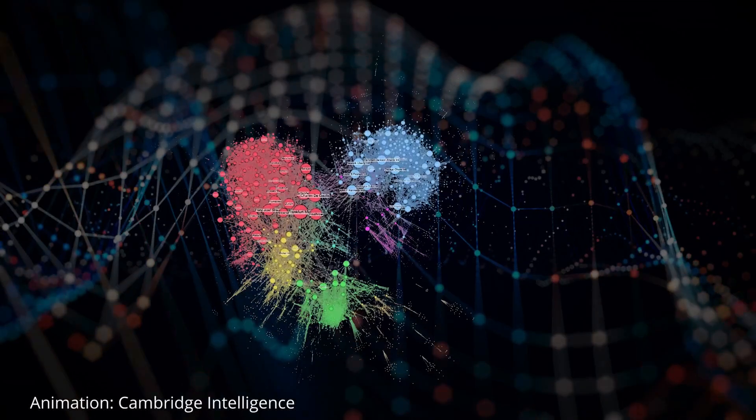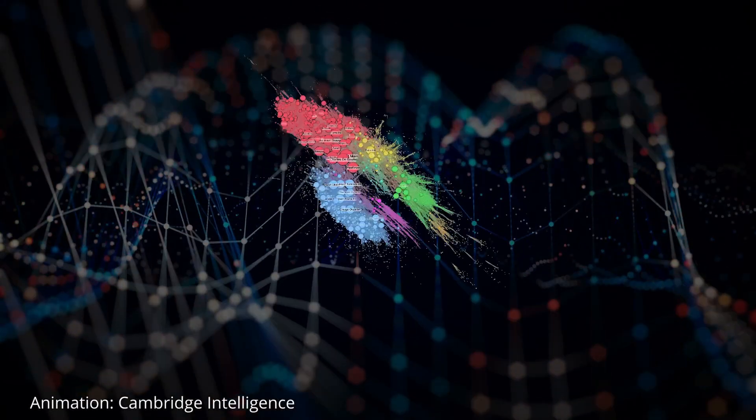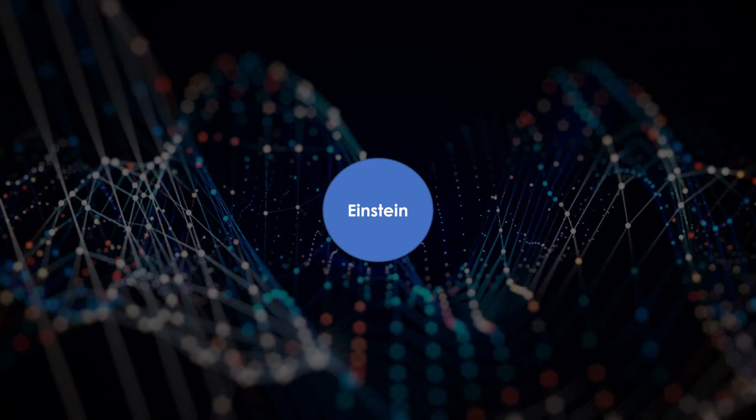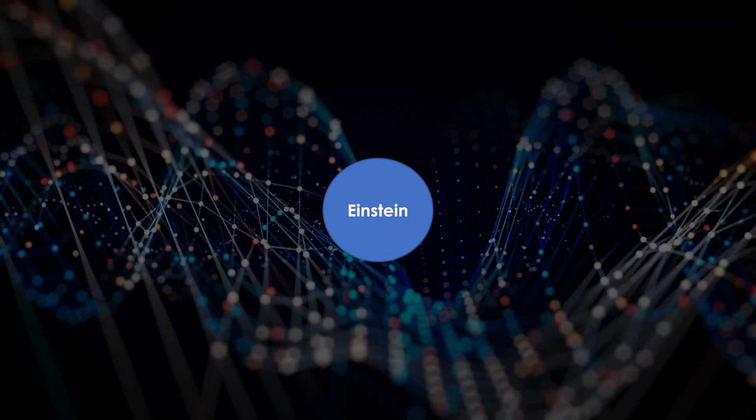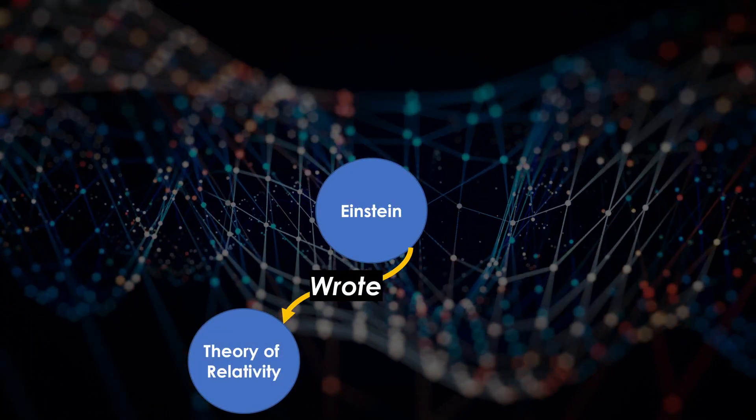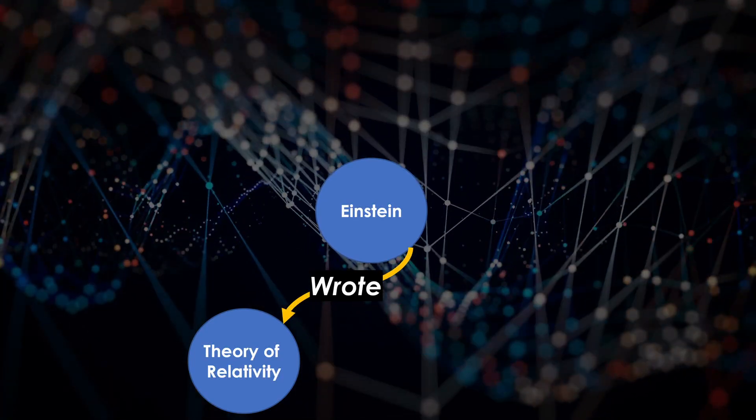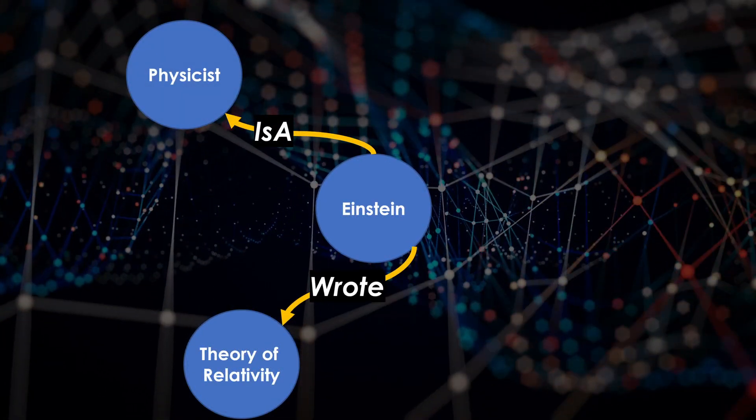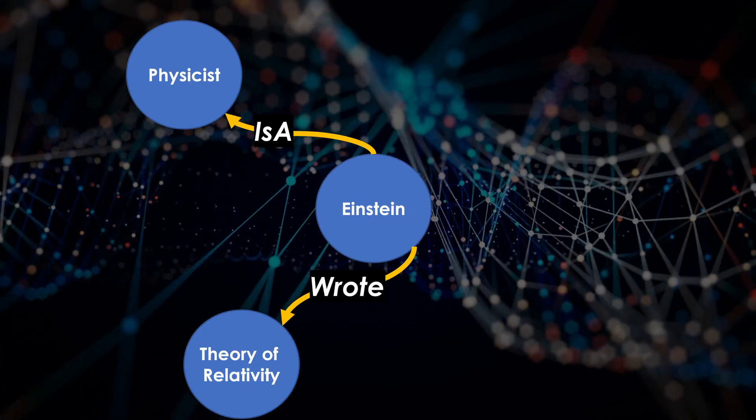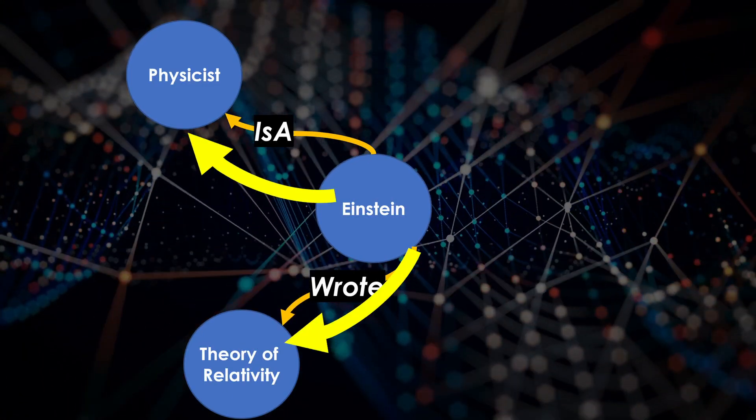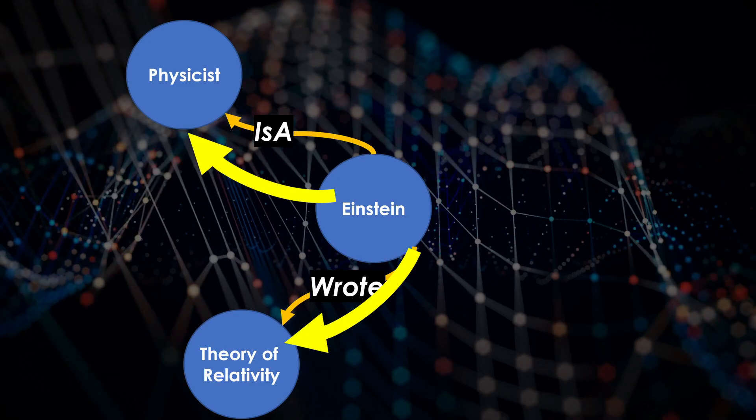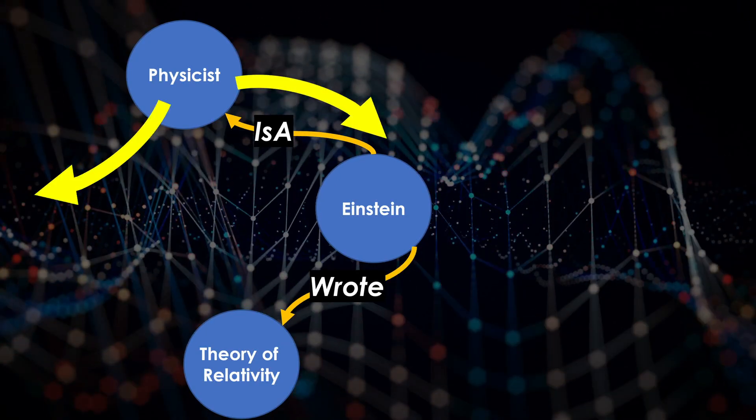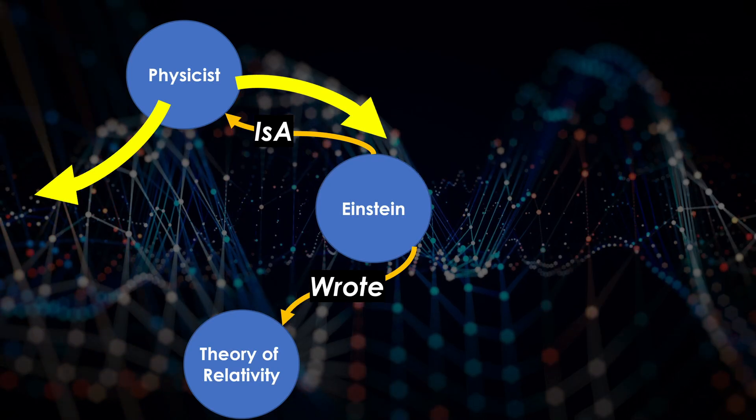Think of it as a web of interconnected facts rather than a black-box statistical model. For example, a node could represent Einstein. An edge could be 'wrote', connecting Einstein to theory of relativity. Another edge could be 'IsA', linking Einstein to physicist. Relationships can be bidirectional, so you can ask, what are the attributes of Einstein? Or name some physicists, and the graph can return the answer.